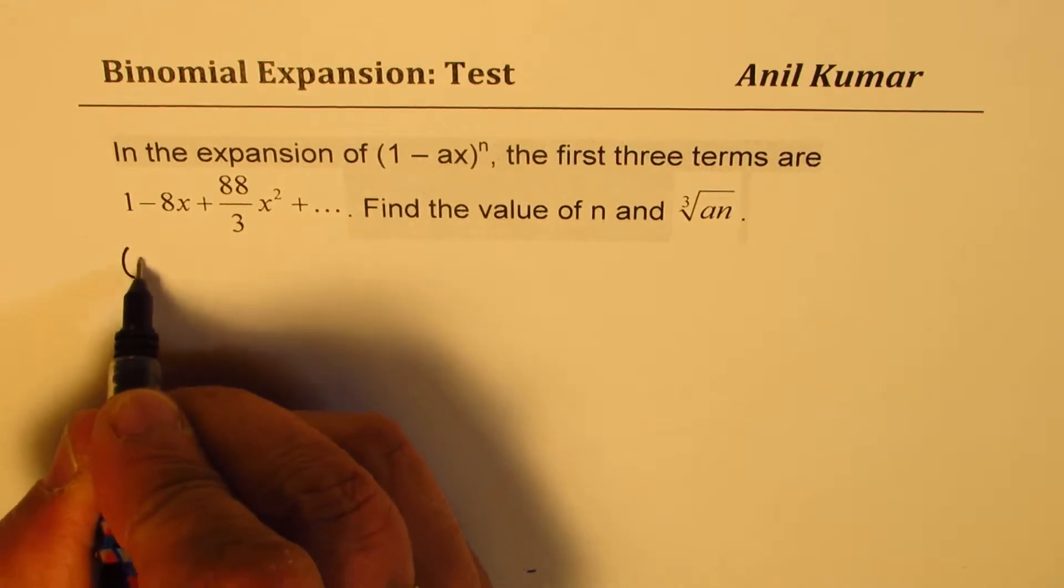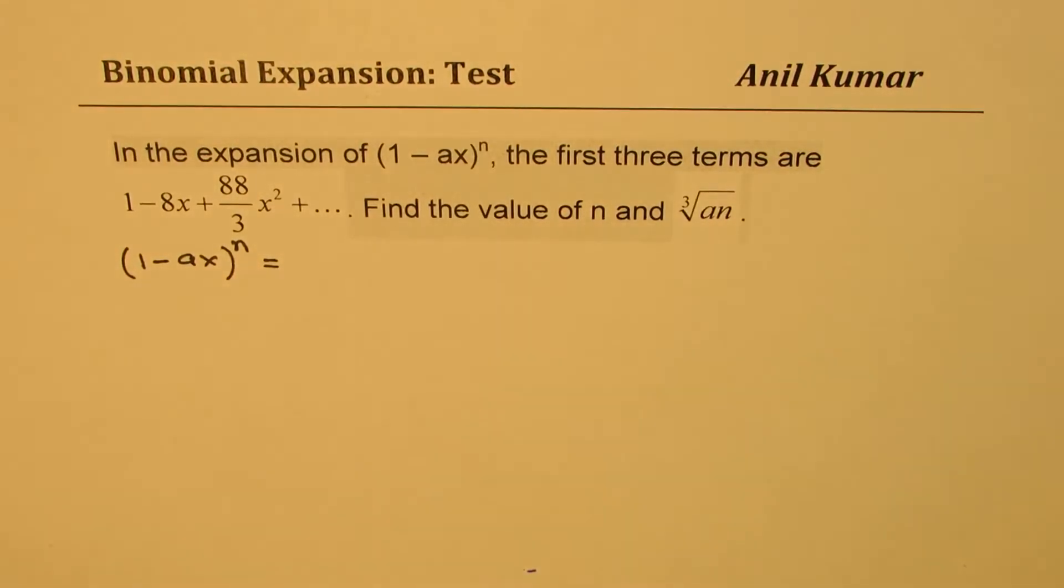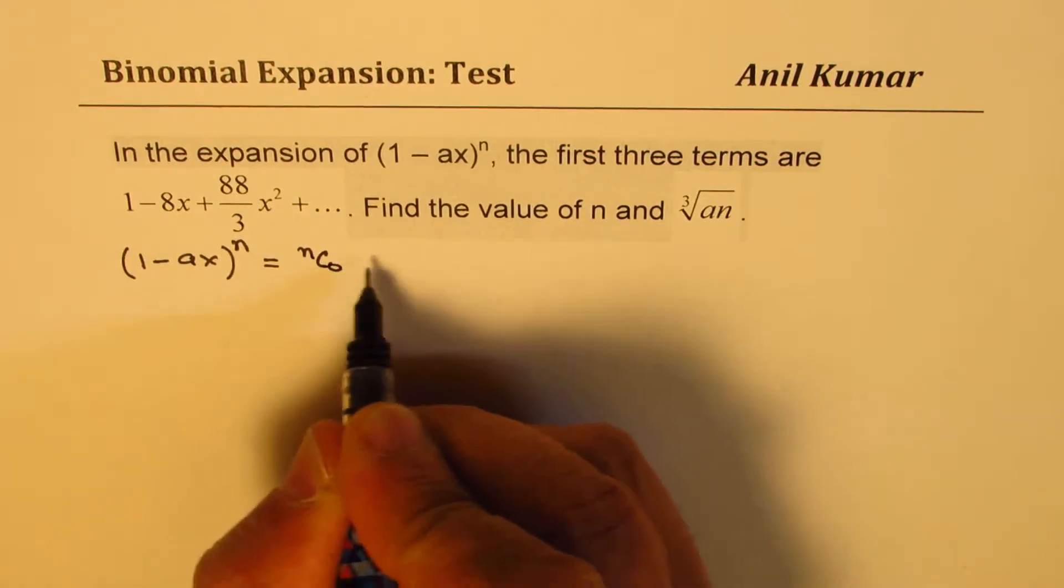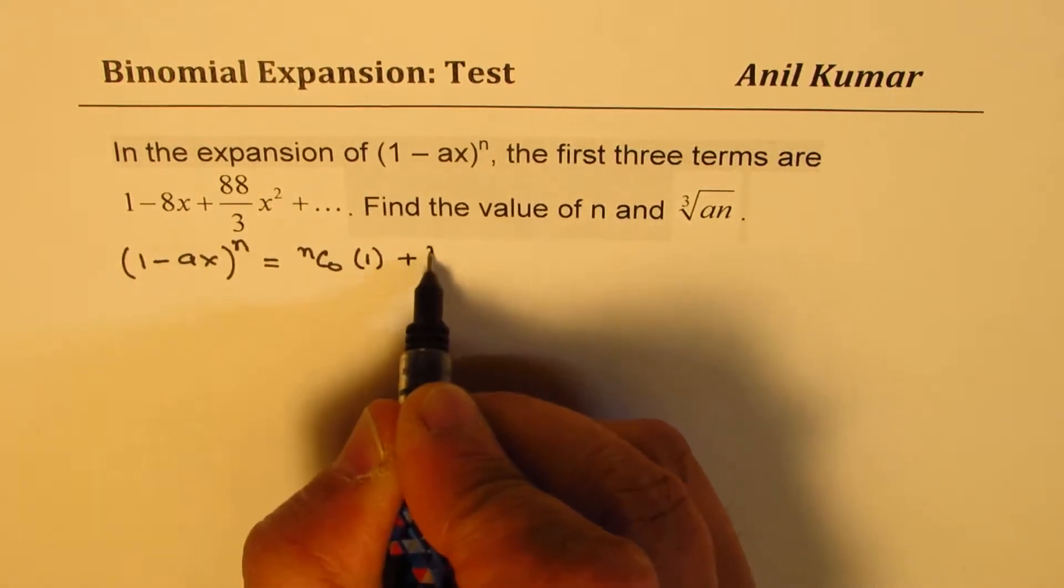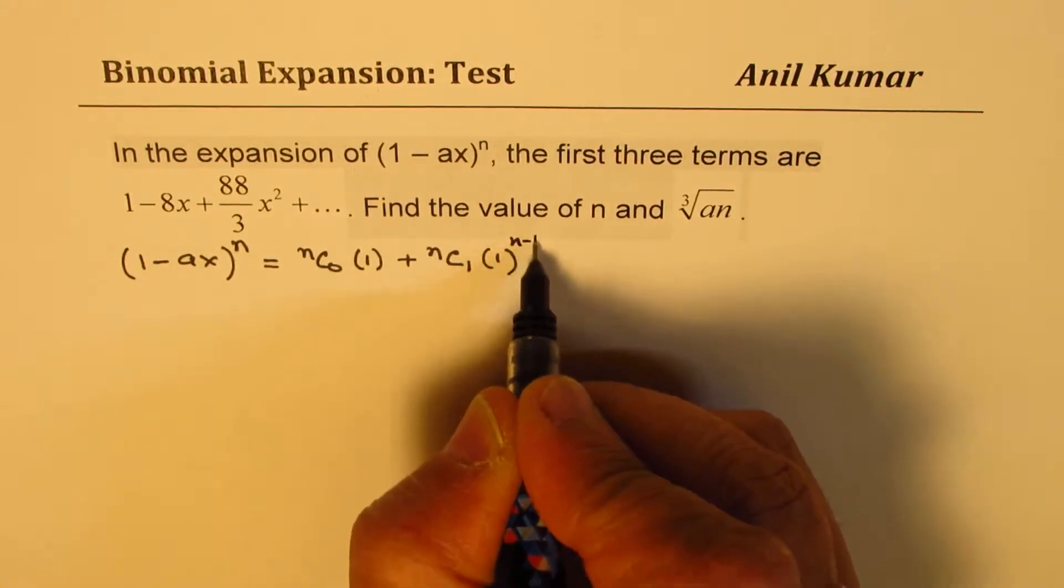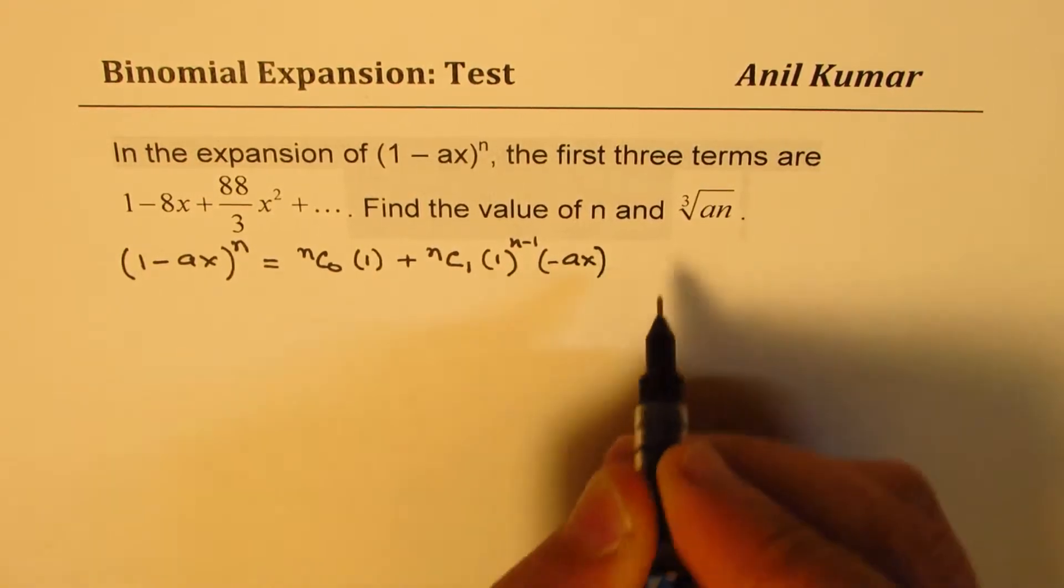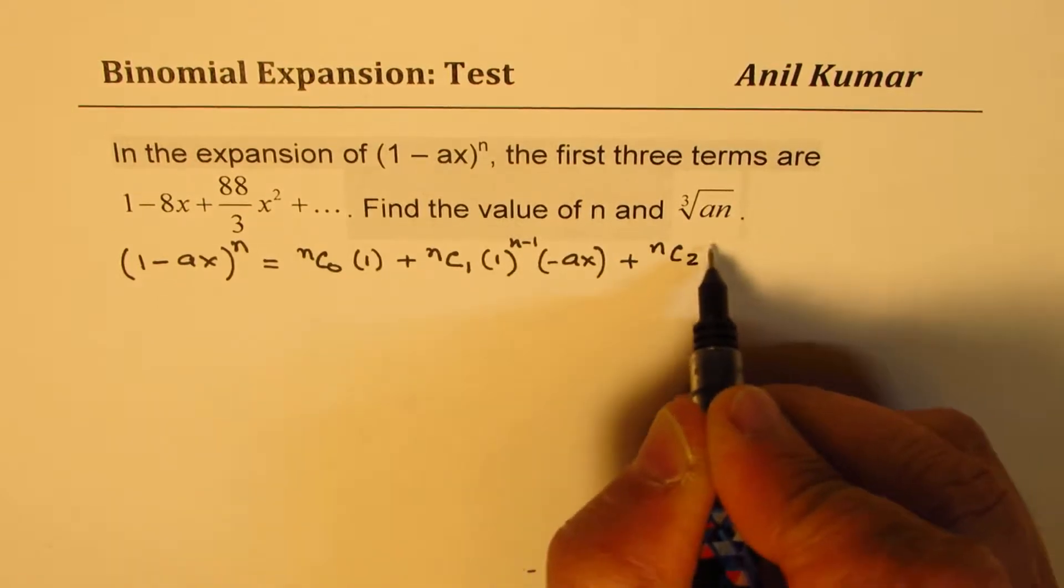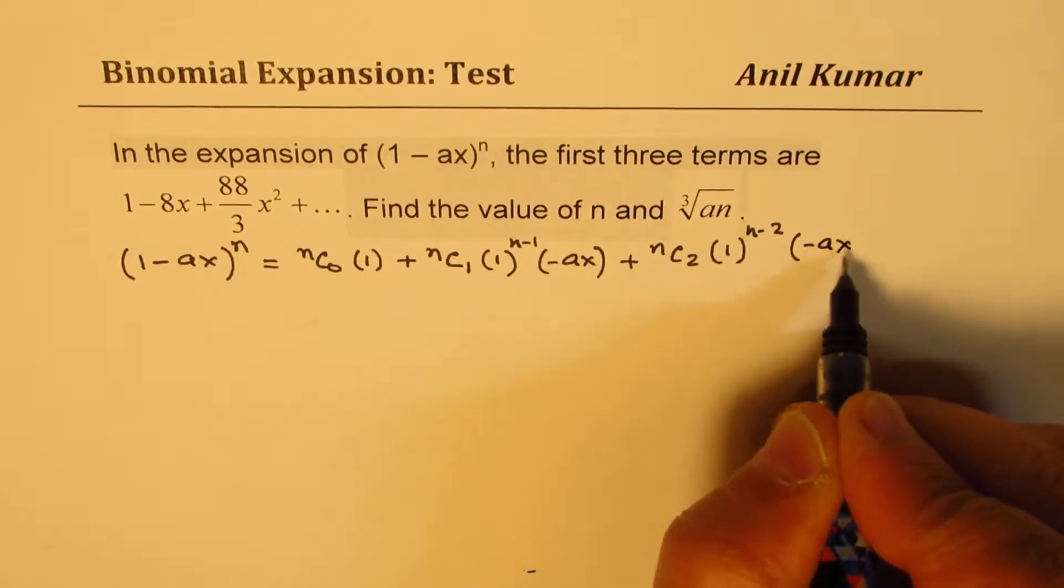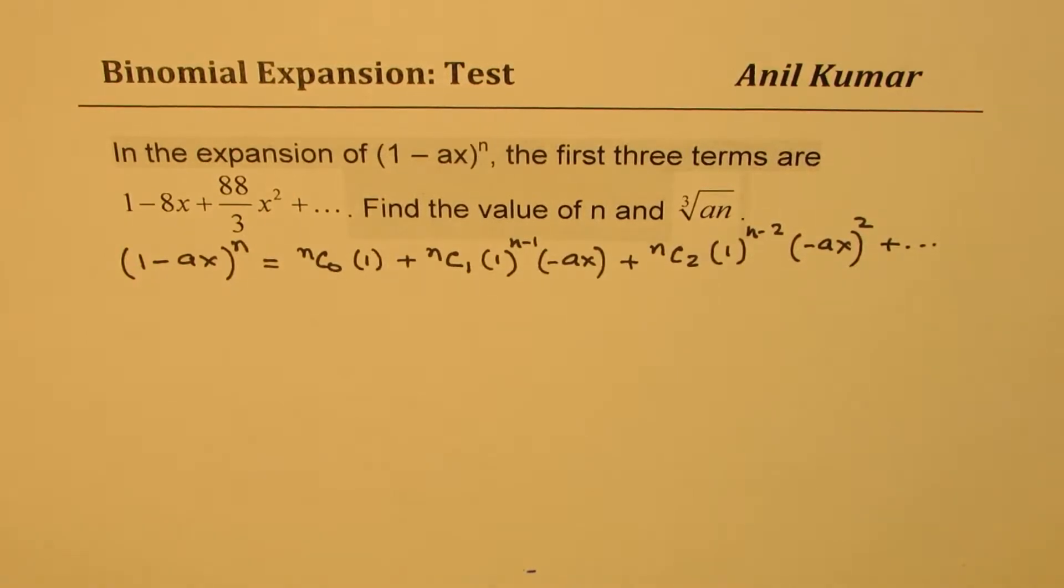We are given the binomial (1 - Ax)^n. If you expand this, we get nC0 times 1 plus nC1, 1^(n-1) times (-Ax), plus nC2, 1^(n-2) times (-Ax)², and so on. The first three terms will be as shown here.